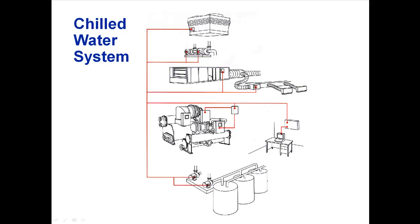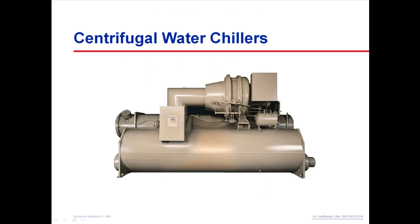Centrifugal water chillers can also be divided into two types based on the method used to reject heat to the atmosphere: water-cooled or air-cooled. Since most centrifugal chillers are water-cooled, they are the primary focus of this clinic. Water-cooled centrifugal chillers are generally available from 300 to 4,000 tons.